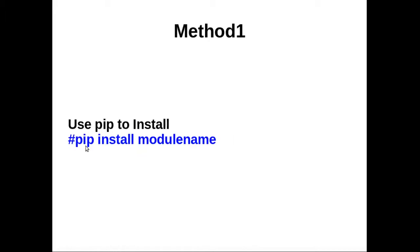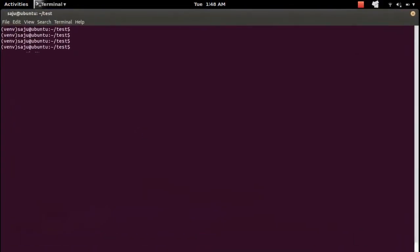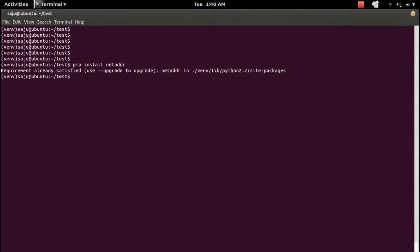There are different methods to install a Python package. The first method is to use the pip tool like this: pip install, then the name of the package or module. I will show you — pip install, then the name of the module, for example netaddr.